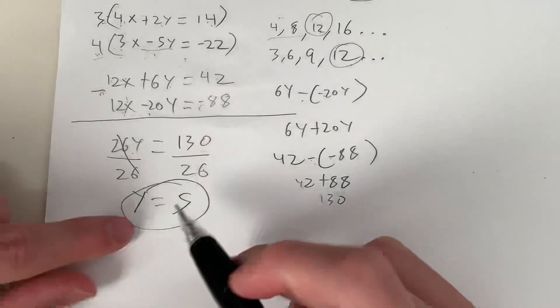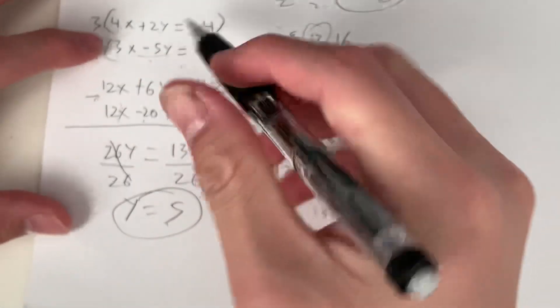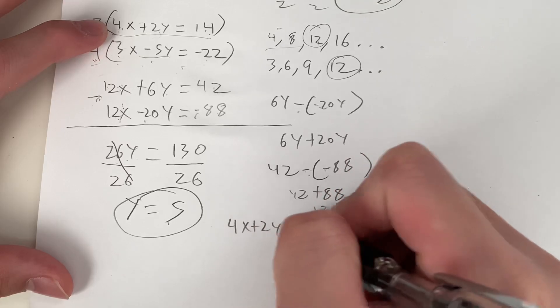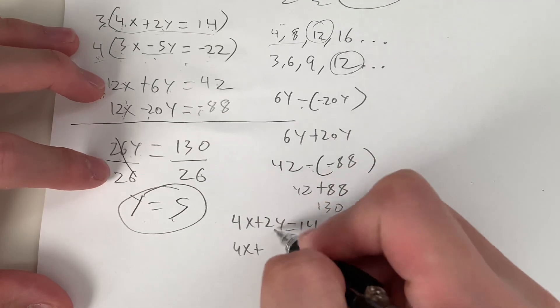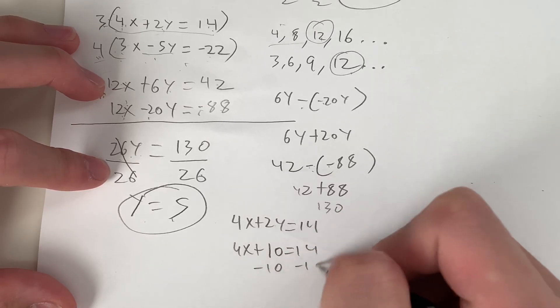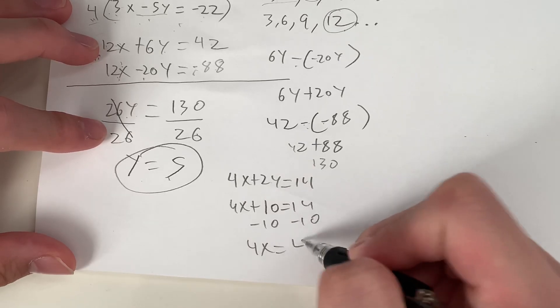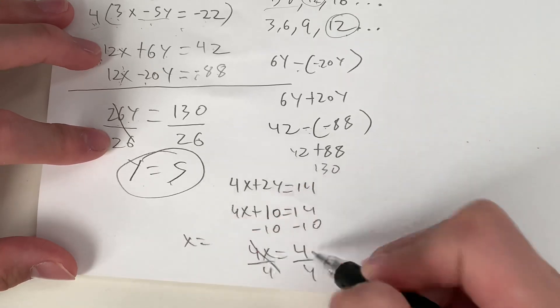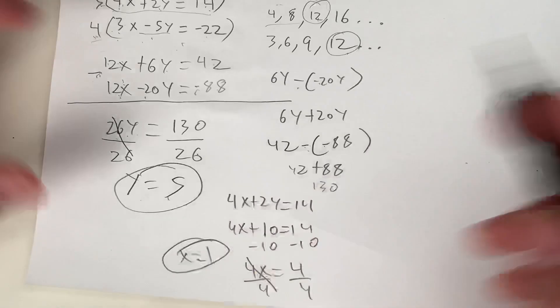So I'm going to choose our first equation. 4x plus 2y equals 14. Now we plug in y for 5. We get 4x plus 2 times 5, which is 10, equals 14. Minus 10 on both sides. We end up with 4x equals 4. Divide both sides by 4, giving us x equals 1. So the value of x is 1, the value of y is 5, and that's how you do it.